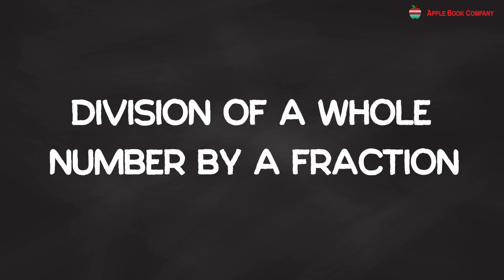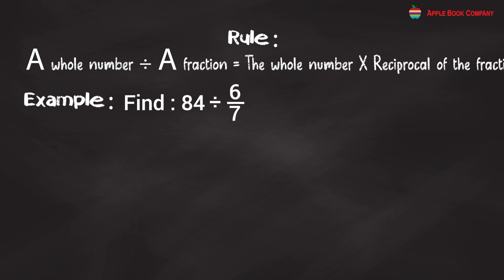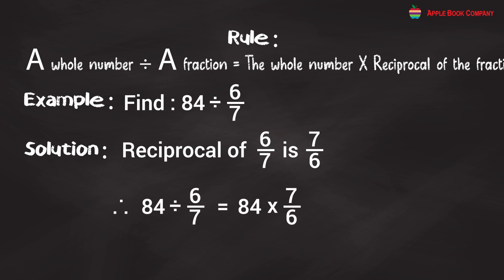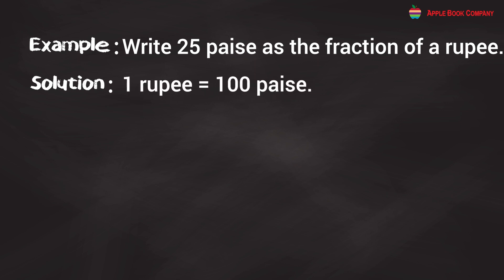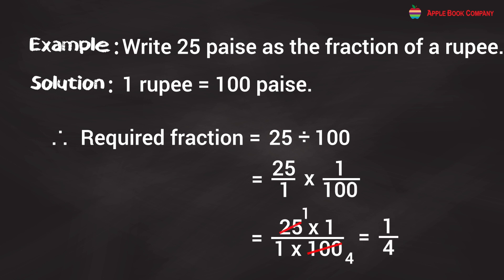Division of a Whole Number by a Fraction. Rule: A whole number divided by a fraction equals the whole number multiplied by the reciprocal of the fraction. Example: Find 84 ÷ 6/7. Reciprocal of 6/7 is 7/6. Therefore, 84 ÷ 6/7 = 84 × 7/6 = 14 × 7 = 98. Example: Write 25 paise as a fraction of a rupee. 1 rupee = 100 paise, so 25/100 = 25 × 1/100 = 1/4.